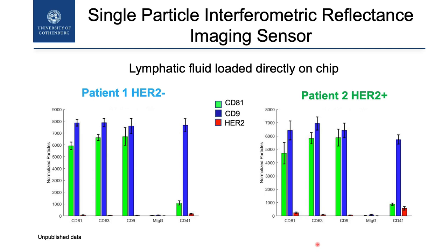Here we got positivity for some markers — CD81, CD63, whatever — but we were interested about HER2. Looking at HER2 in red, it was not really so well present. The question was: can we believe in this small amount of vesicles? If I would get this by ELISA, I'm not so sure that I can believe it, because it is just a number.